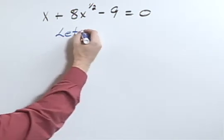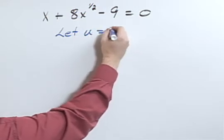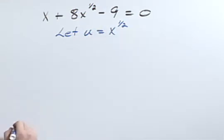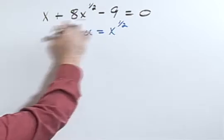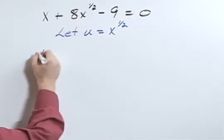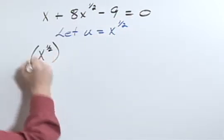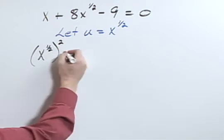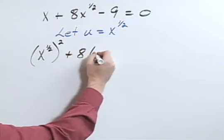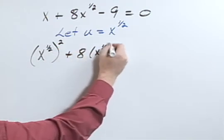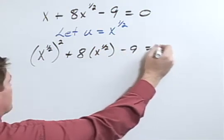In this case, let's let u equal x to the 1 half. I can rewrite this equation then as x to the 1 half squared plus 8x to the 1 half minus 9 equals 0.